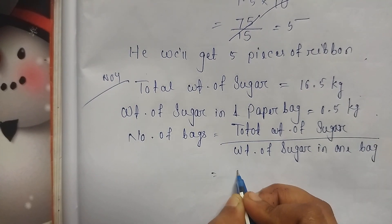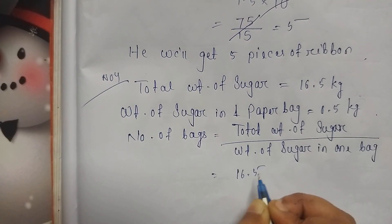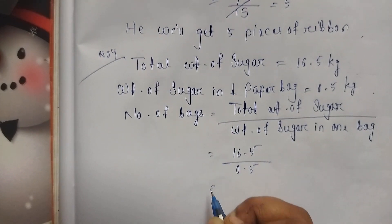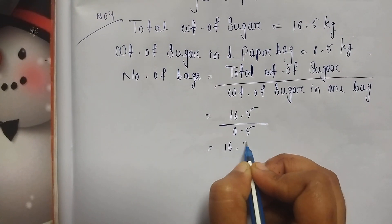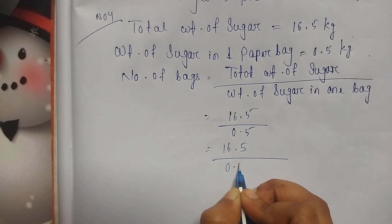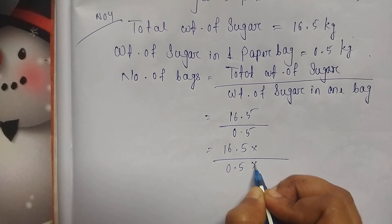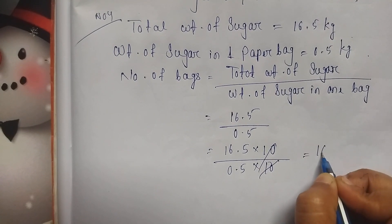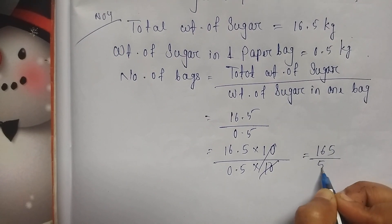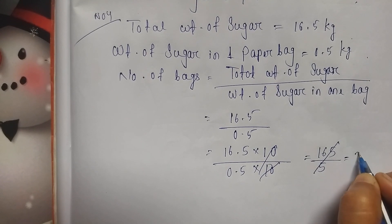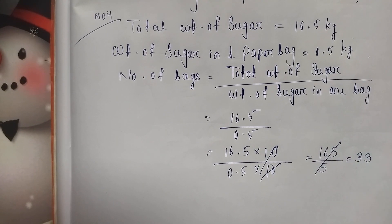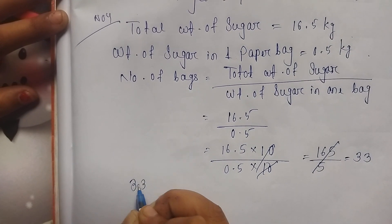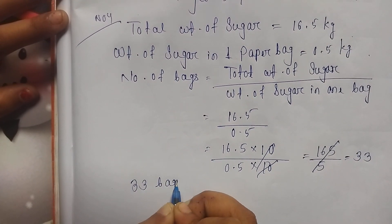Total weight of sugar is 16.5 kilograms. Then 16.5 divided by 0.5 — the decimal place is one number, so we put 10; the 10s cancel. Then 165 divided by 5: 5 times 3 is 15, 5 times 3 is 15, giving 33. So 33 bags are there.